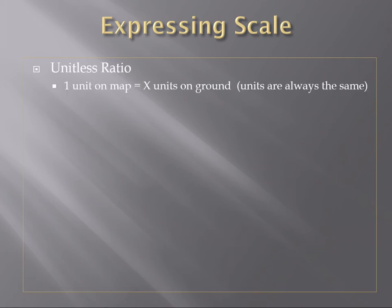So the unitless ratio is usually the most common one that we use. It's one unit on the map equals so many units on the ground. The units have to be the same. So if I'm using inches, I use inches on both sides. If I'm using kilometers, which would be really weird, but it would be kilometers on both sides, or meters or centimeters. Usually it's centimeters in Canada here.